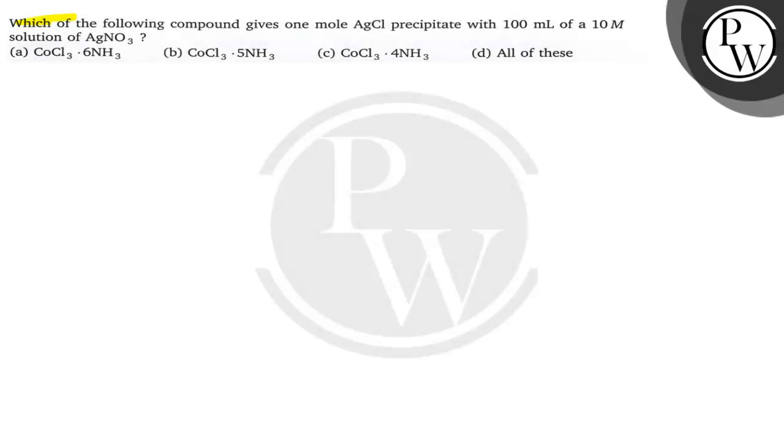Hello, let us see this question. Which of the following compound gives one mole AgCl precipitate with 100 mL of a 10 M solution of AgNO3? There are four options A, B, C, D. We need to select one correct option after solving this question.